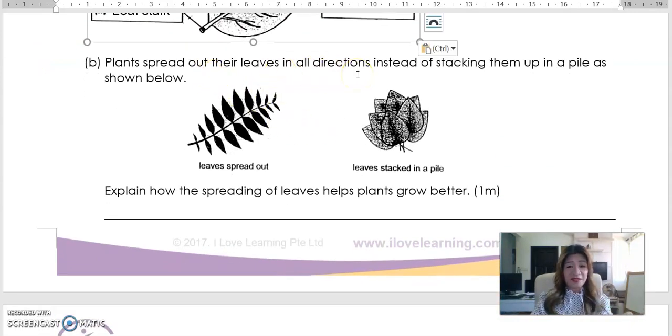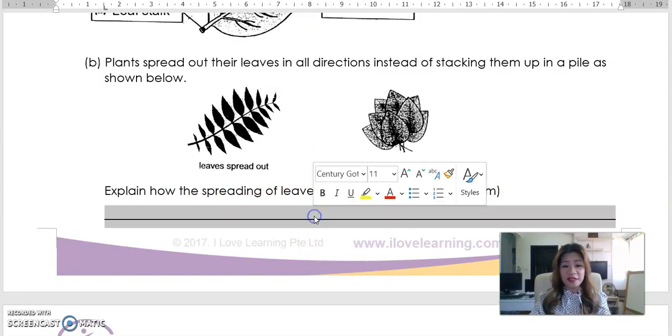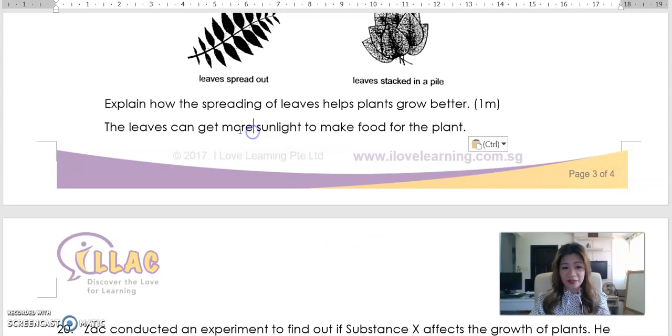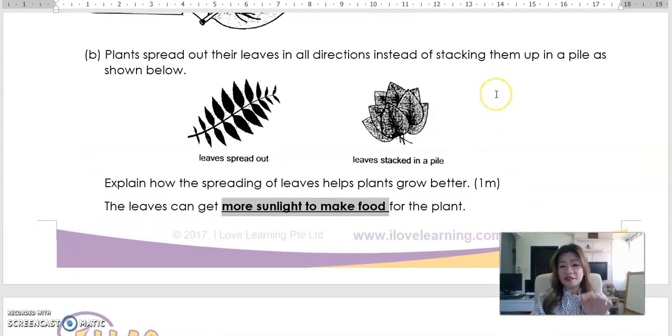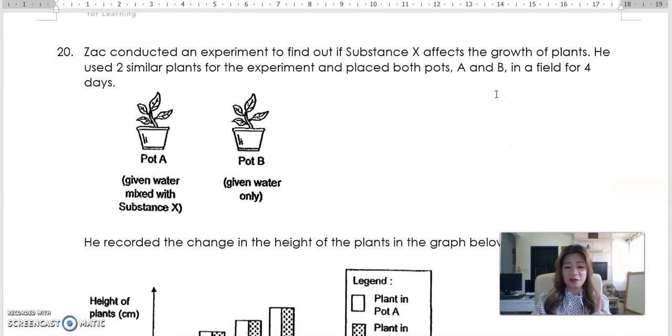Plants spread out their leaves just now I was explaining in all directions instead of stacking them up in a pile like this. So why do they do that? Explain how the spreading of leaves helps plants grow better. Because so that the leaves can get more sunlight. So the keyword over here will be to get more sunlight to make food. So what are you tested over here? You have tested the fact that plants or leaves need the sunlight to make food. That is the concept that you're being taught over here. Plants, leaves need sunlight to make food for the plant in order to survive. That is a concept we're being tested.